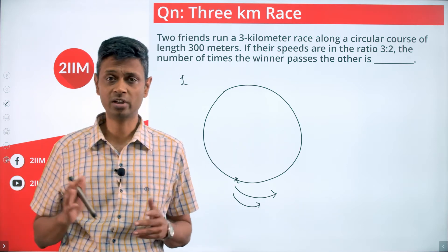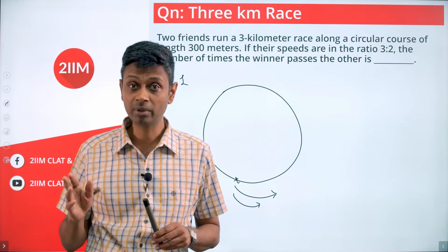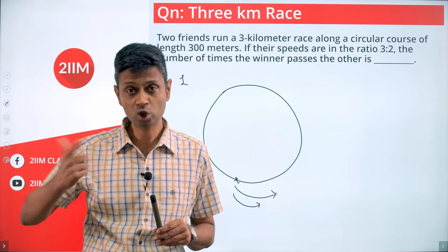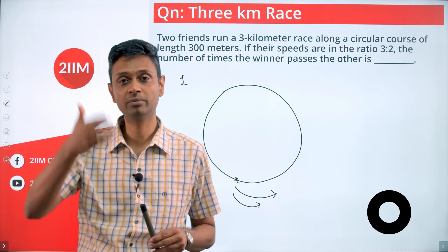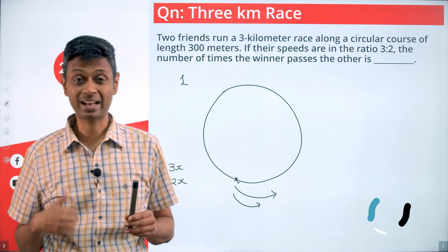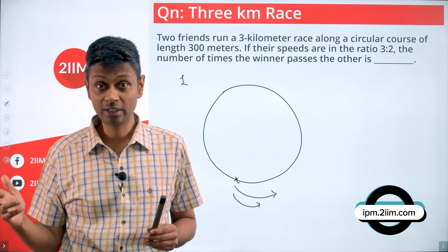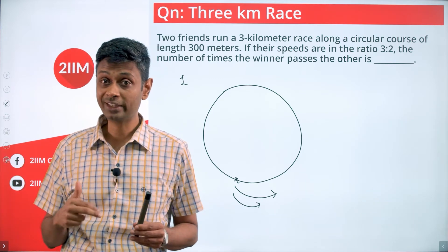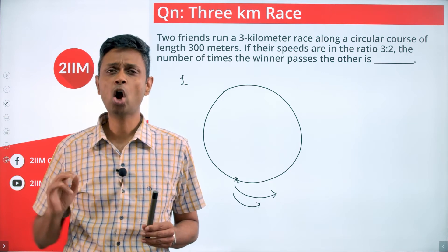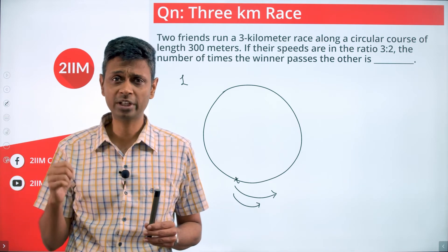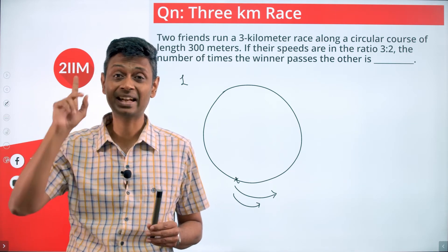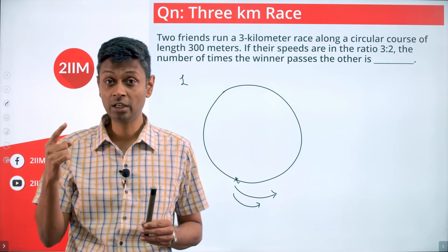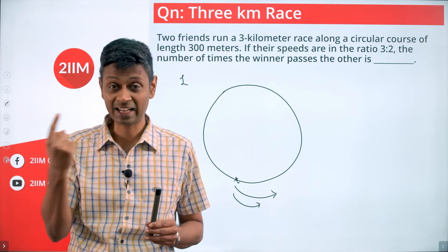He'll go so much faster, but at some point of time he'll catch up with the slower guy and then overtake him. Imagine in an F1 race where the guy gets lapped out - he'll go so much quicker and he'll come back all the way over and then overtake the slower guy. How much should he gain to overtake the second guy? He has to gain an entire lap. The quicker guy has to gain an entire lap for him to overtake.